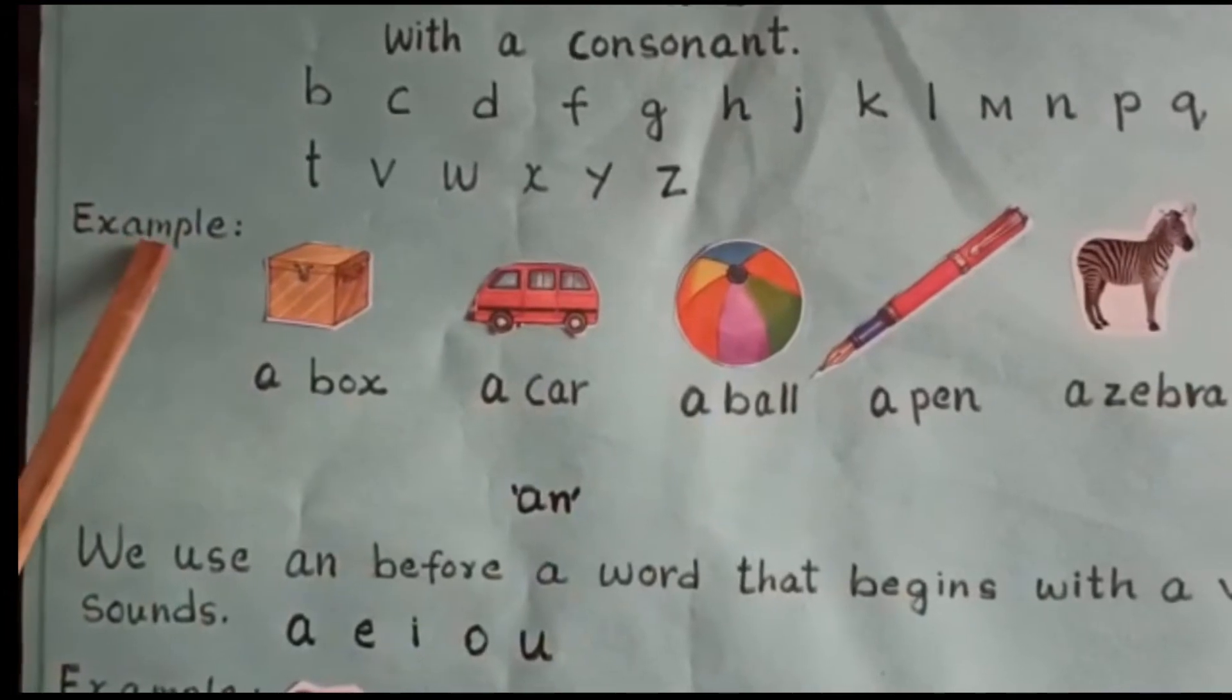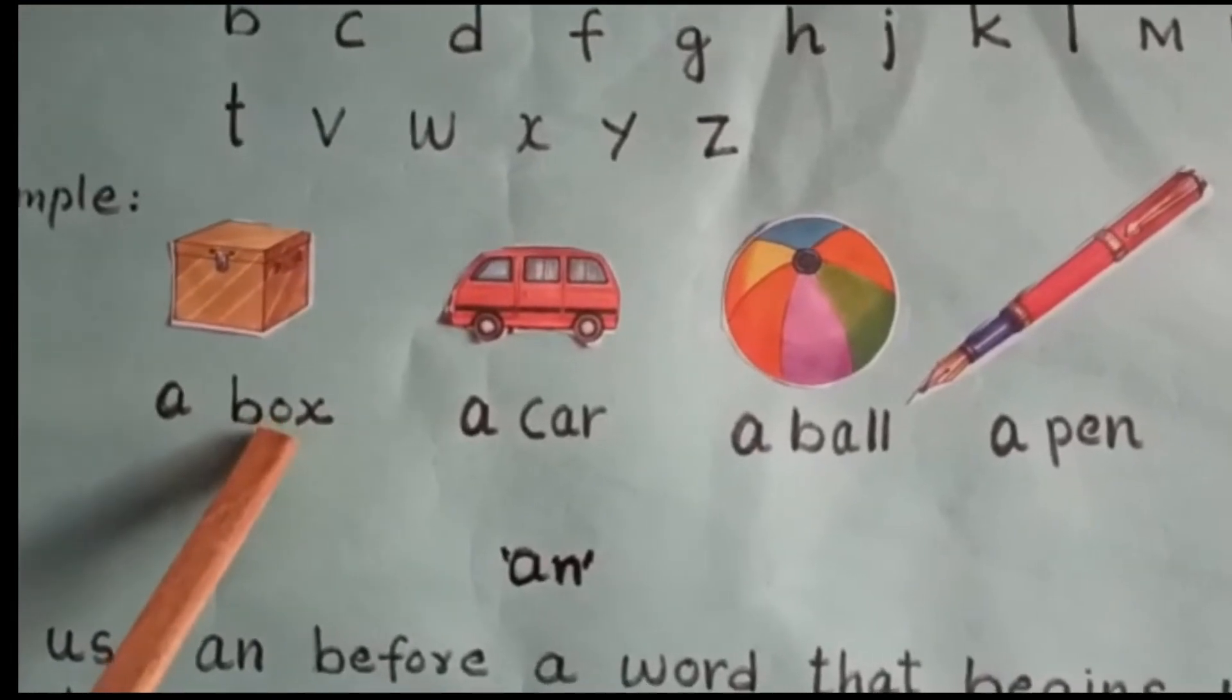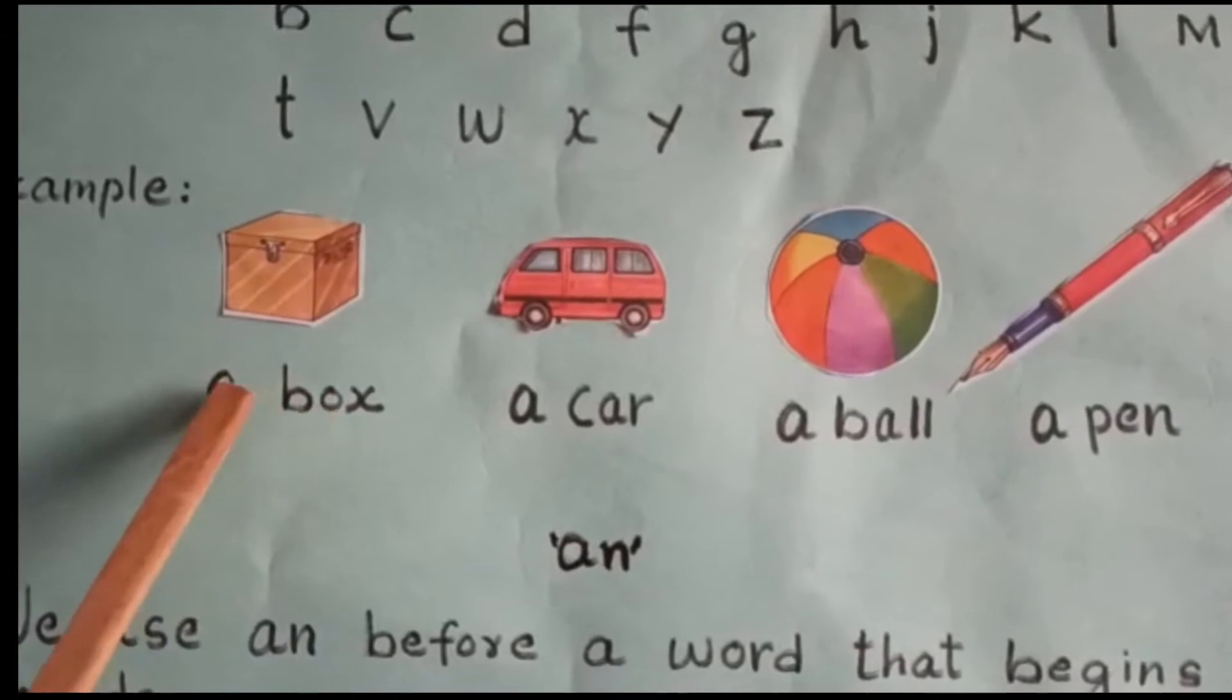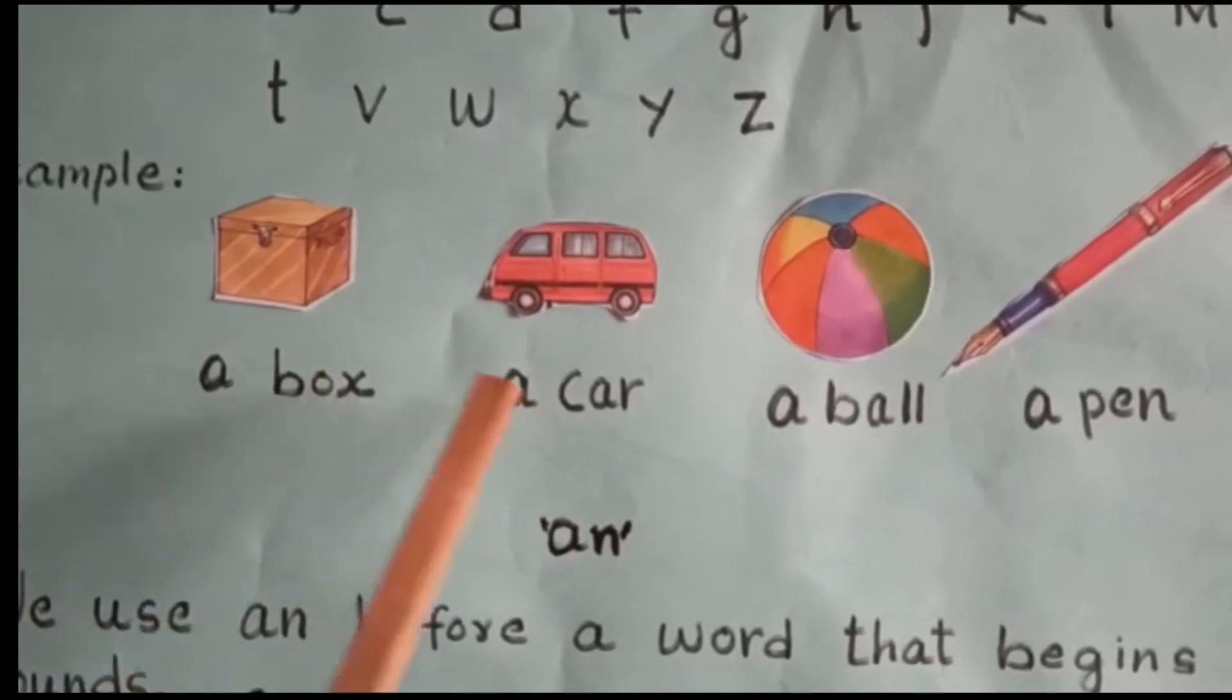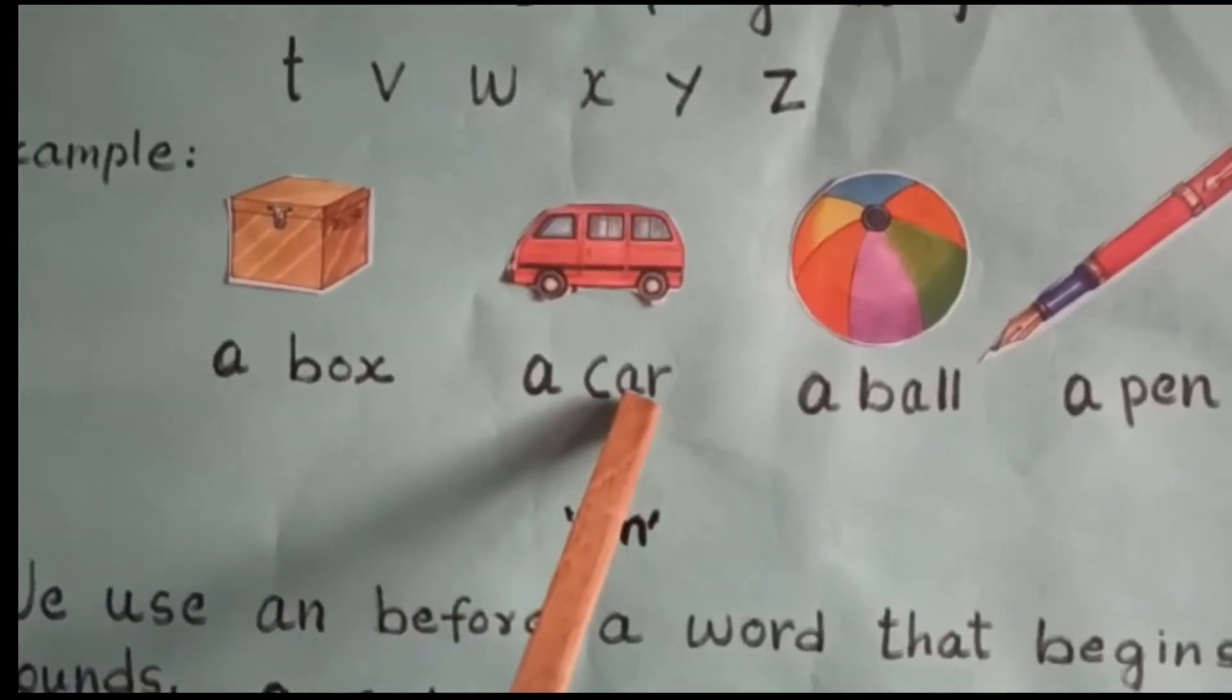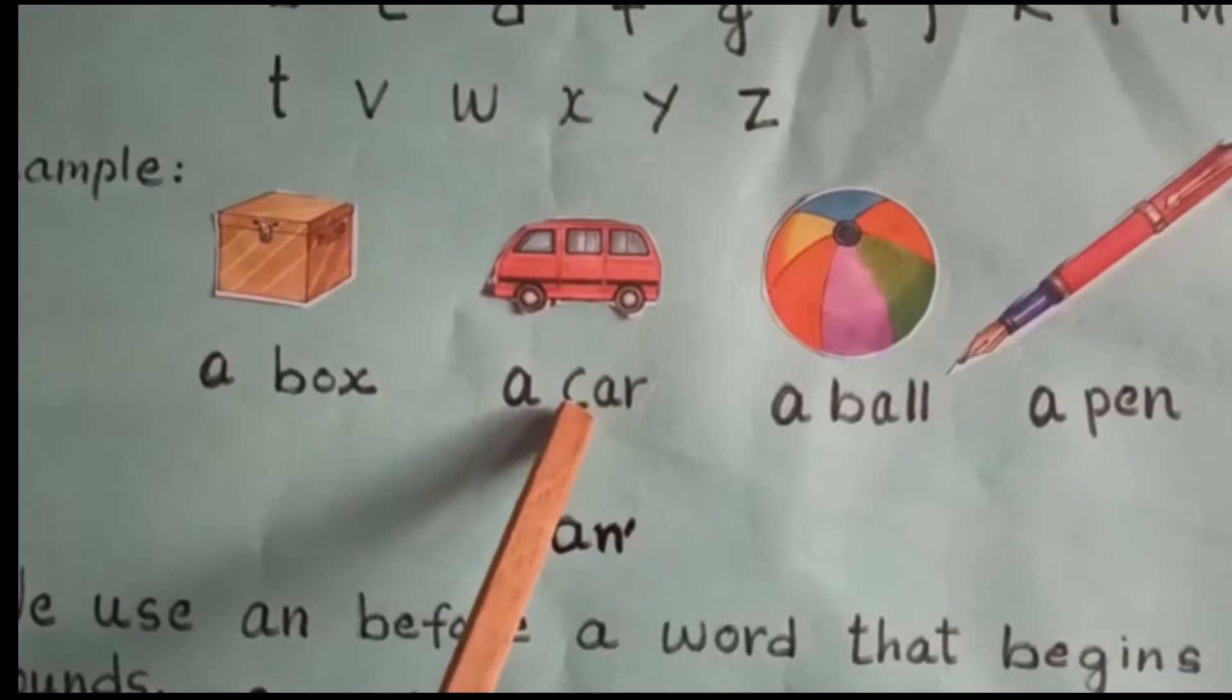For example, a box. We use a before box because first letter B is a consonant. A car. Before car we use a because the first letter C is a consonant.